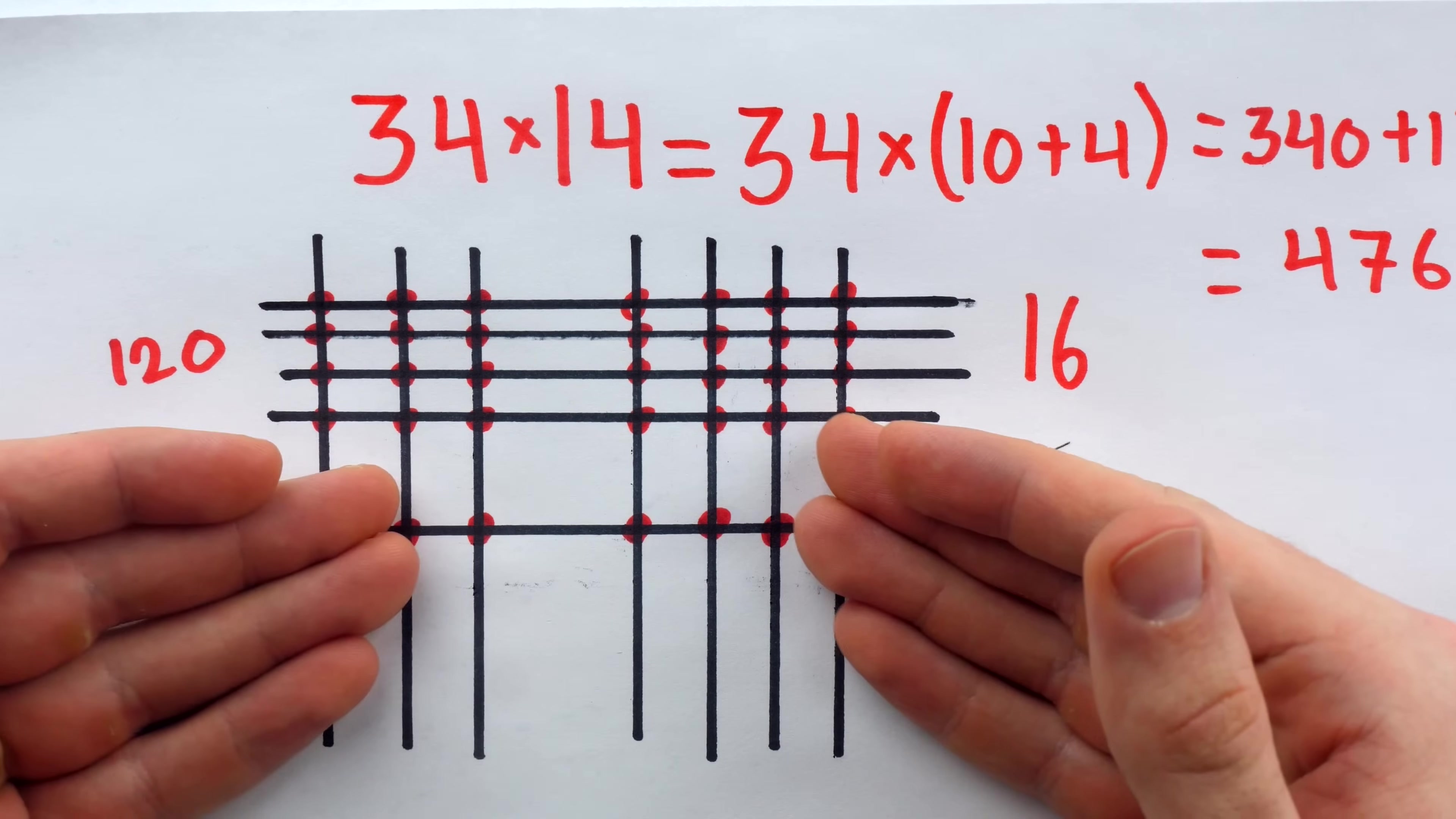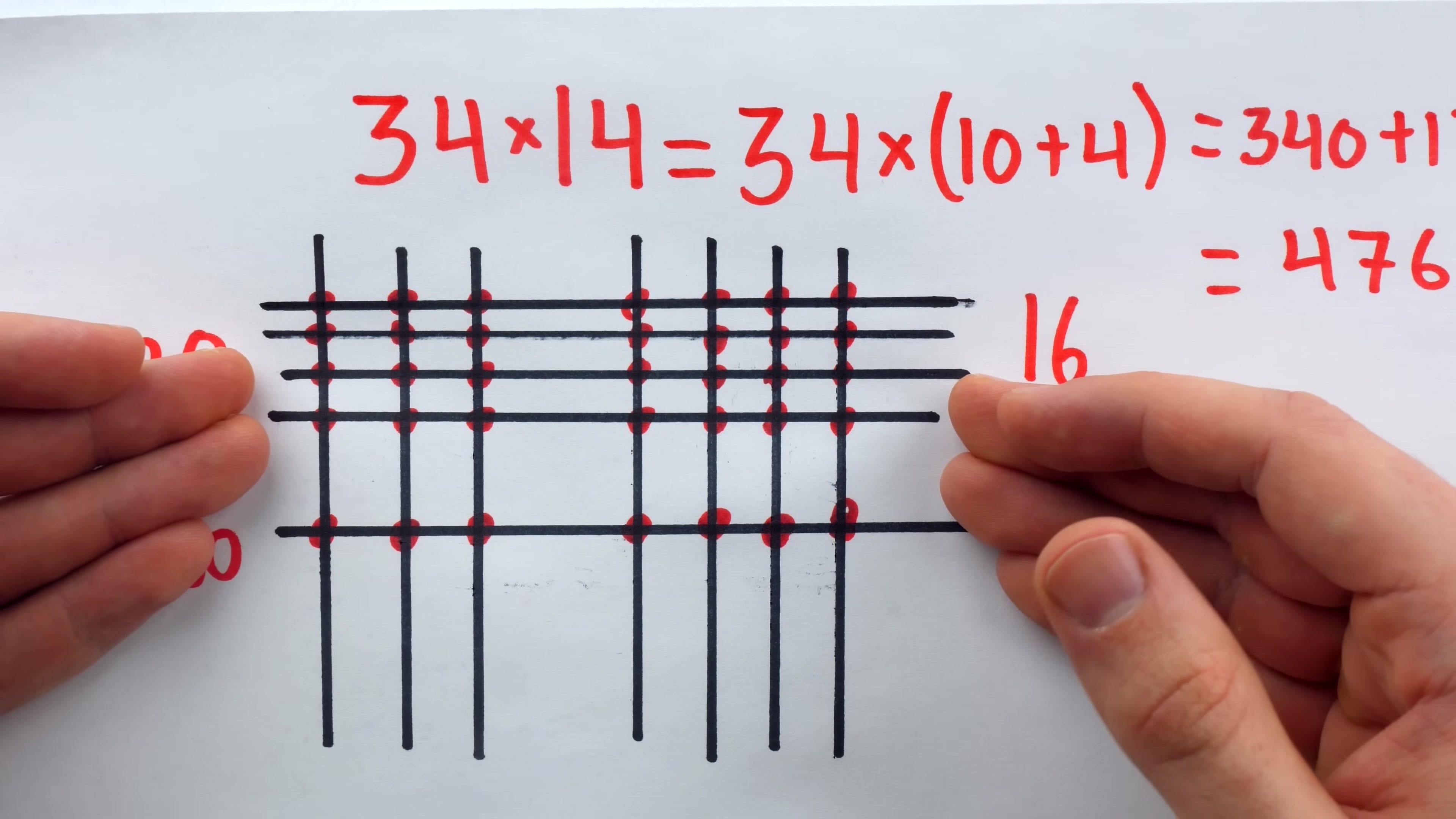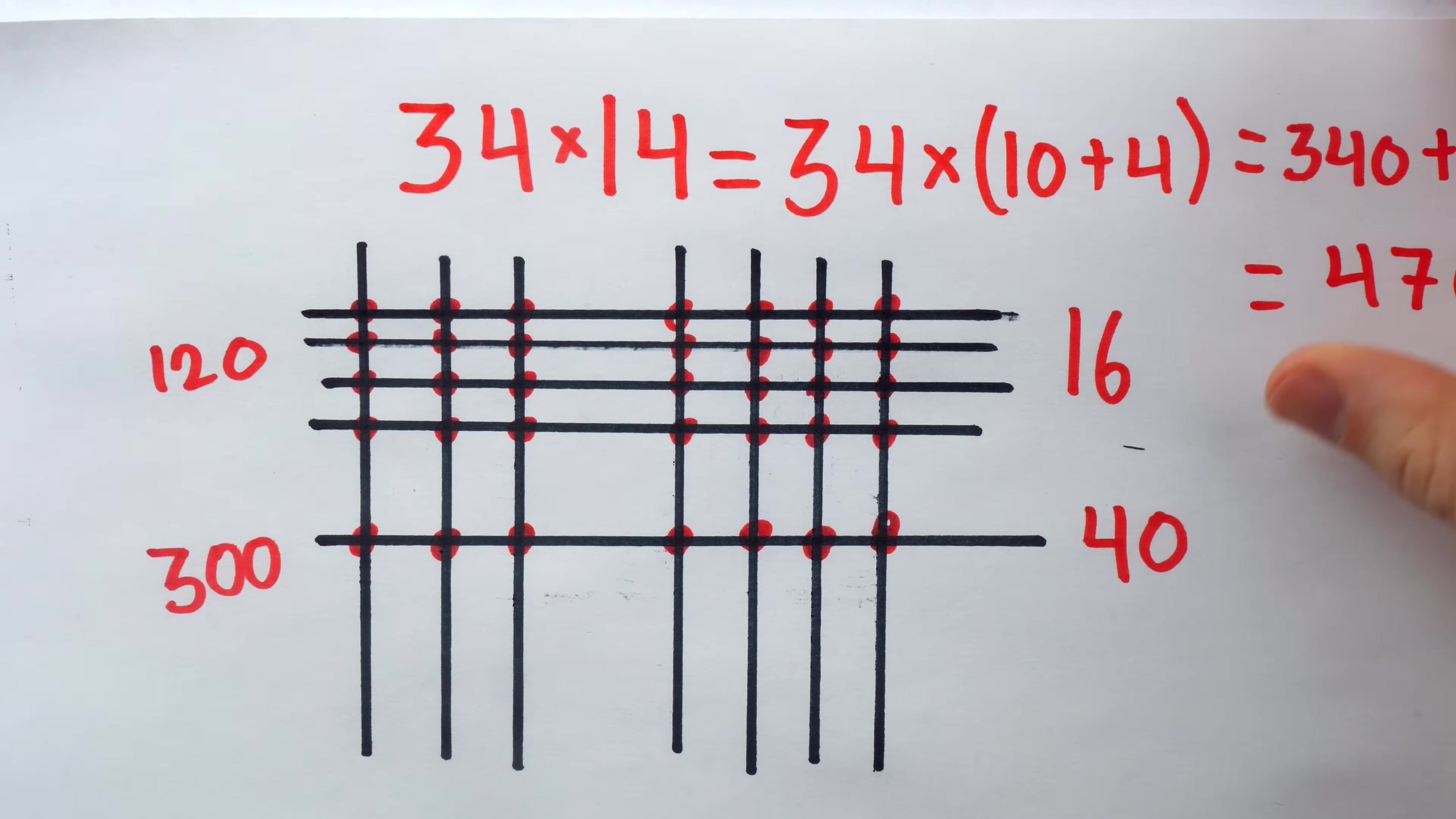Why is this method of multiplication so inefficient? And why does it work? Well, the answer to those two questions is the same, which is that it's basically just using the definition of multiplication. All it is is a shortcut for creating a rectangle of dots.